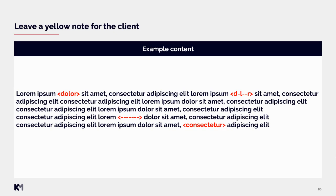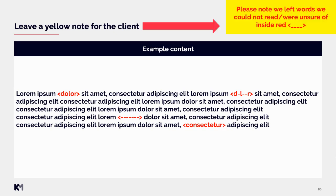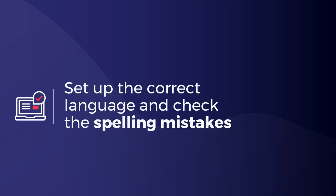Another good tip is to leave a yellow note for the client, such as: 'Please note we left words we could not read or were unsure of inside red placeholders.' This is a really nice way to inform your admin and the client about uncertain words.